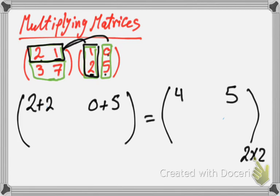We finish from the first row. We go to the second one. 3 by 1 is 3. 7 by 2 is 14.